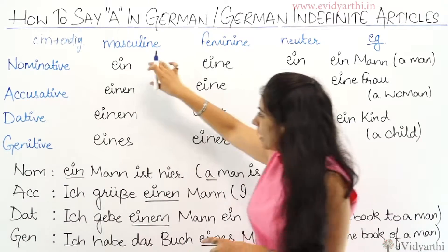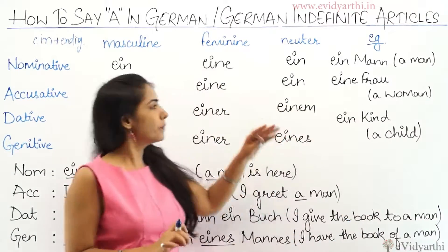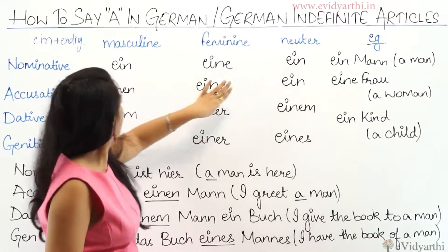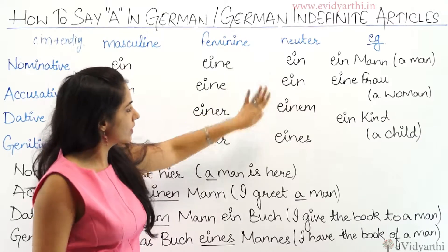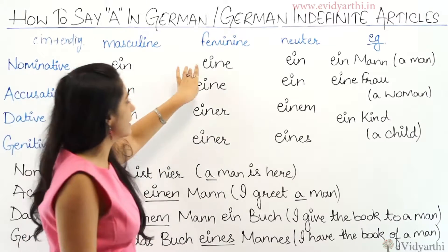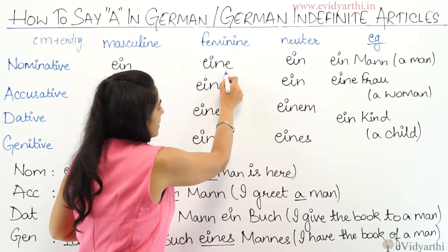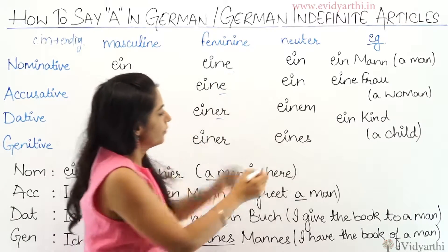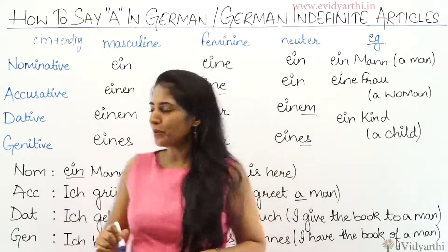In masculine nominative and neuter nominative there is no ending. Here you have to memorize the endings: 'E' appears in several positions, 'ER' here, 'EM' here, and 'ES' here.